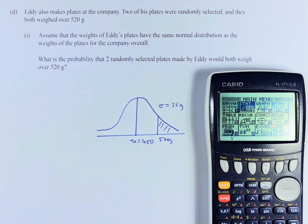Eddie also makes plates at a company. Two of his plates were randomly selected and they both weigh over 520 grams. Assume that the weight of Eddie's plates have the same normal distribution as the weight of the plates for the company overall. What is the probability that two randomly selected plates by Eddie would both weigh over 520 grams?